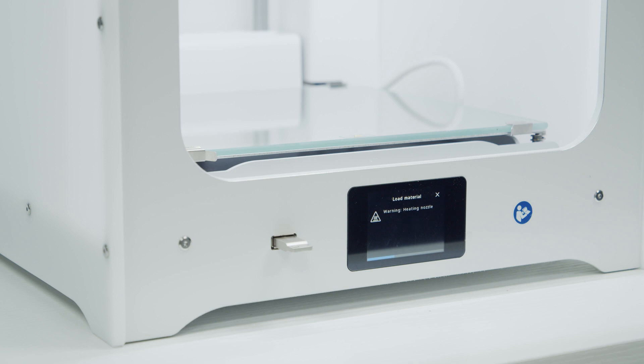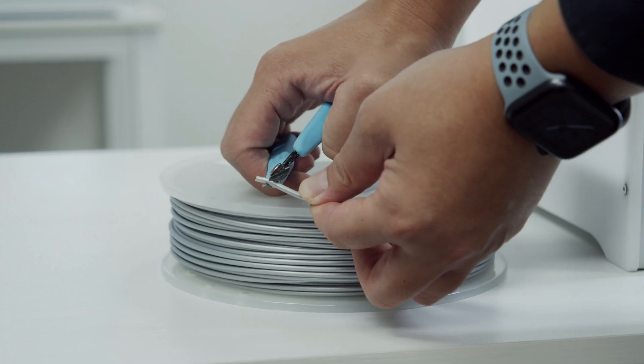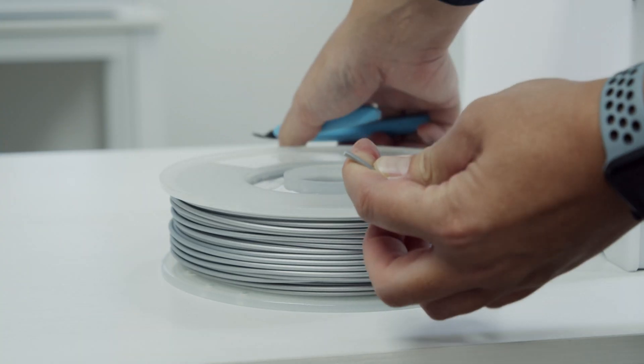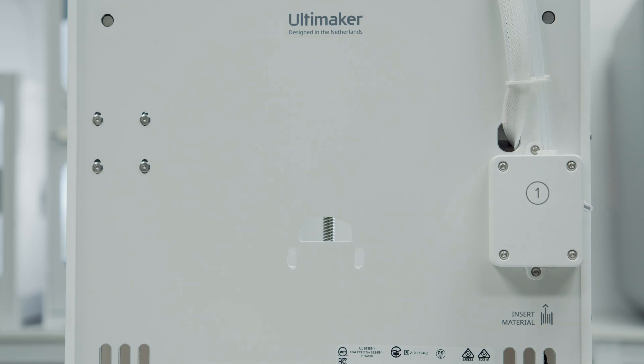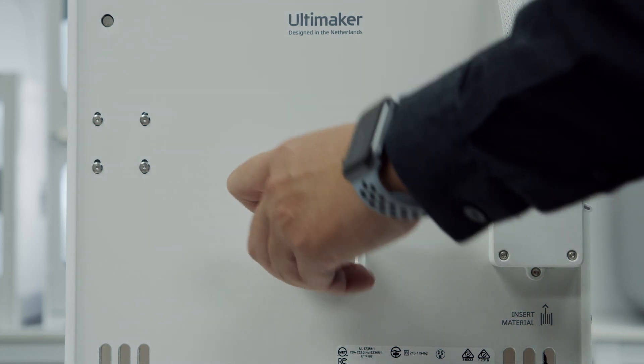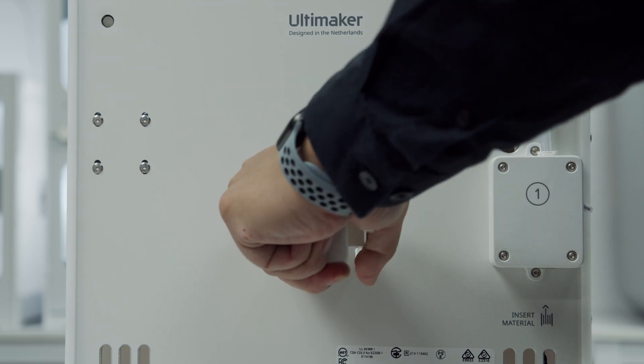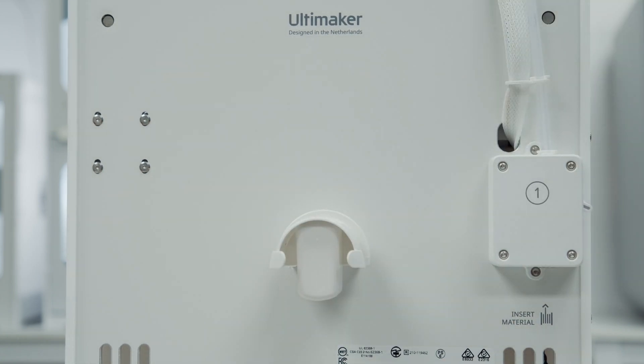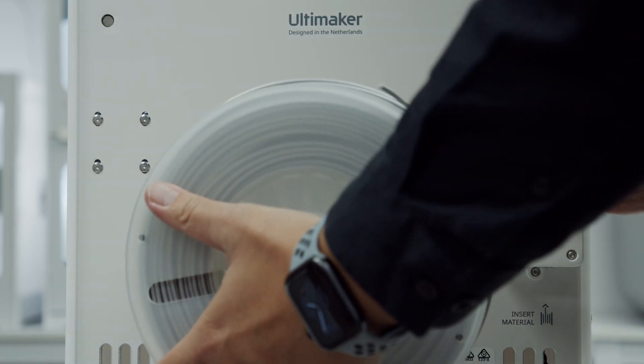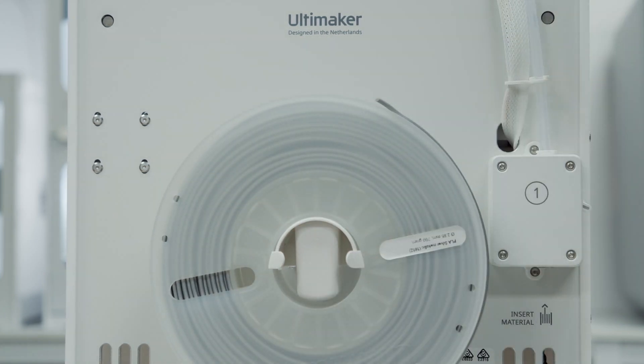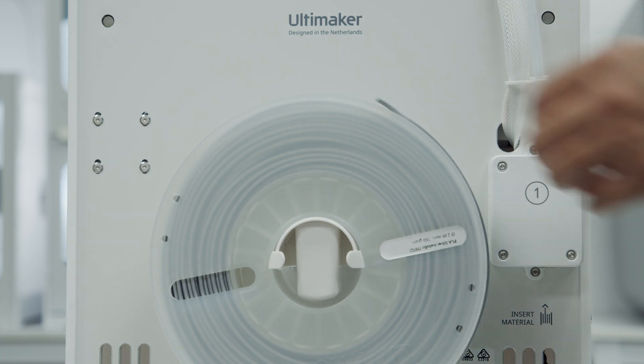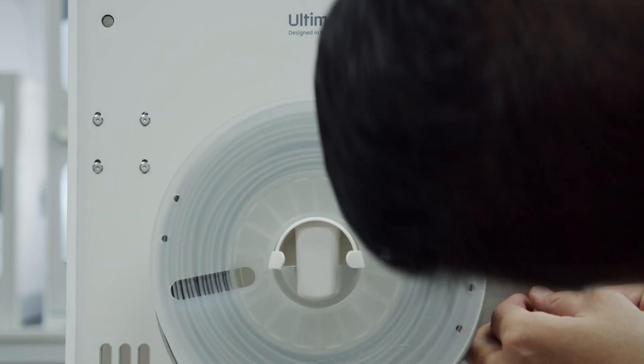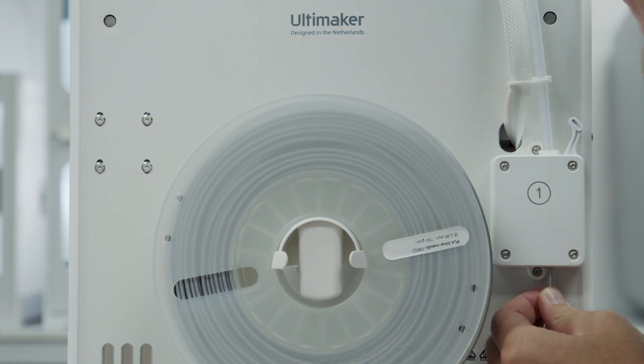The nozzle will heat up so that filament can be printed. Get your filament ready by cutting the end at an angle, making it easier to go into the feeder. Put the top tab in and then push down until the two bottom tabs click into place. Now place the filament spool onto the filament holder. Open the feeder lever, then you can start pushing the material into the feeder.